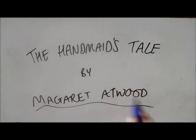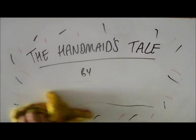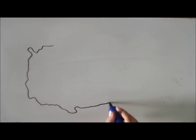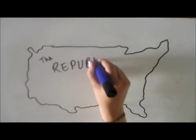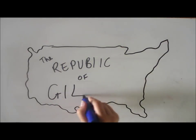The Handmaid's Tale by Margaret Atwood. The novel is set in the future, where the United States of America has been replaced by a new totalitarian state called the Republic of Gilead.